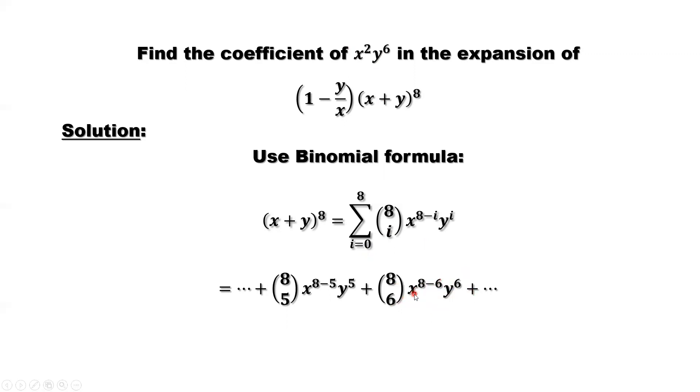And another term, this term: 8 choose 5, i equals 5. Here's y⁵, x³. So here, relate to this part, because we use this to time this one. You have y here. You already have y⁵. Together, it's y⁶,